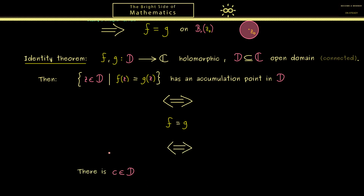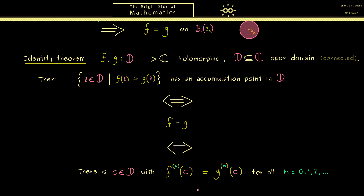However we can also put in a second equivalence here. This is the statement that we find a special point in d, which we call c, at which all the derivatives of f and g coincide — and we need this equality for all natural numbers n including 0. So this means if you consider the Taylor expansion, the power series expansion of both functions, they coincide at this given point. Hence they also already coincide in a neighborhood around this point, and indeed this is also enough to conclude that f is actually equal to g.